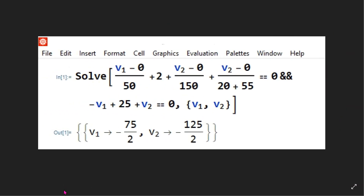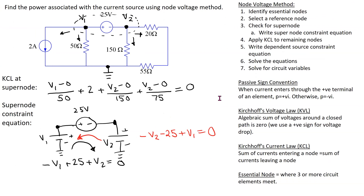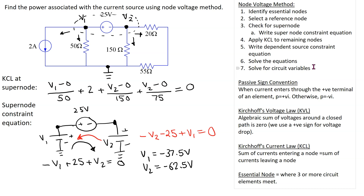We can use Mathematica to obtain the solution. Using the solve command and solving these two equations, we find that v1 is equal to minus 37.5 volts and v2 is equal to minus 62.5 volts.